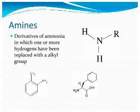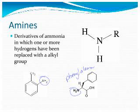So amines do take lots of different forms. Amino acids have amino groups in them — amine groups. Here's the amine group in phenylalanine. You'll notice it also has a carboxylic acid group. That's why it's called an amino acid.